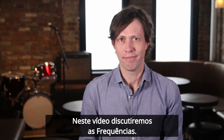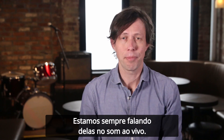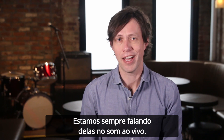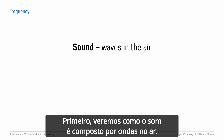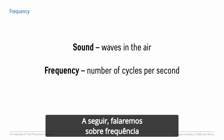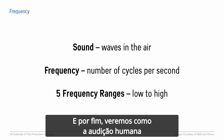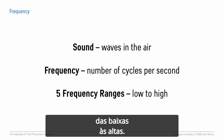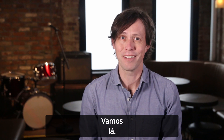In this video, we discuss frequency. This is one of the building blocks of music, and it's something we talk about all the time in live sound. First, we'll explain how sound is waves in the air. Then, we'll talk about frequency, which is the number of cycles per second. And finally, we'll learn how human hearing is divided into five frequency ranges, from low to high, as well as listen to some music examples. Let's begin.